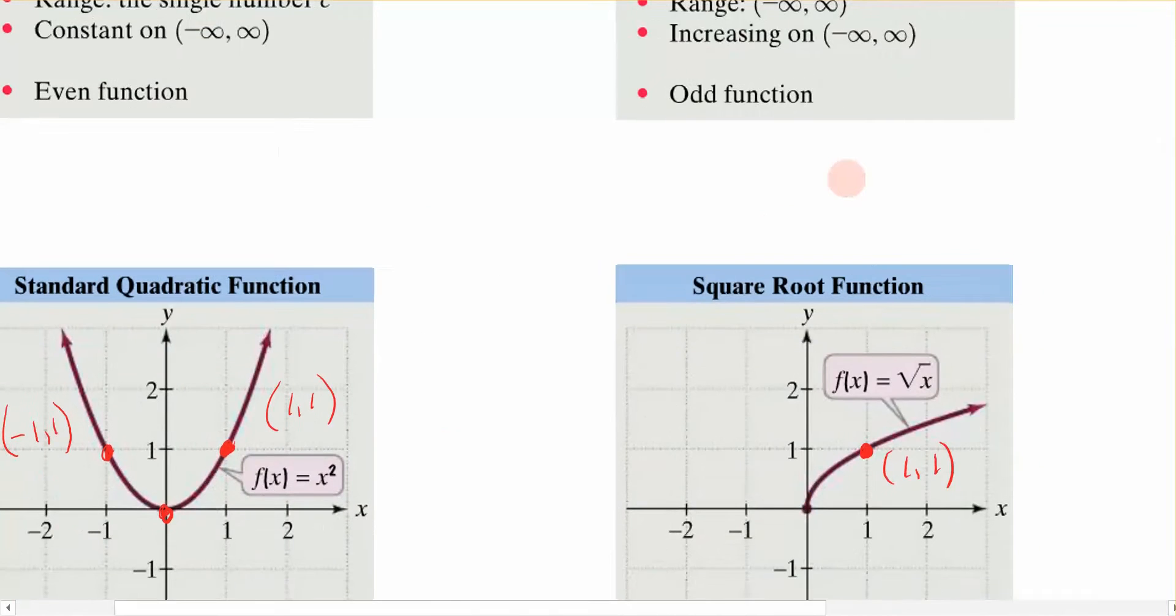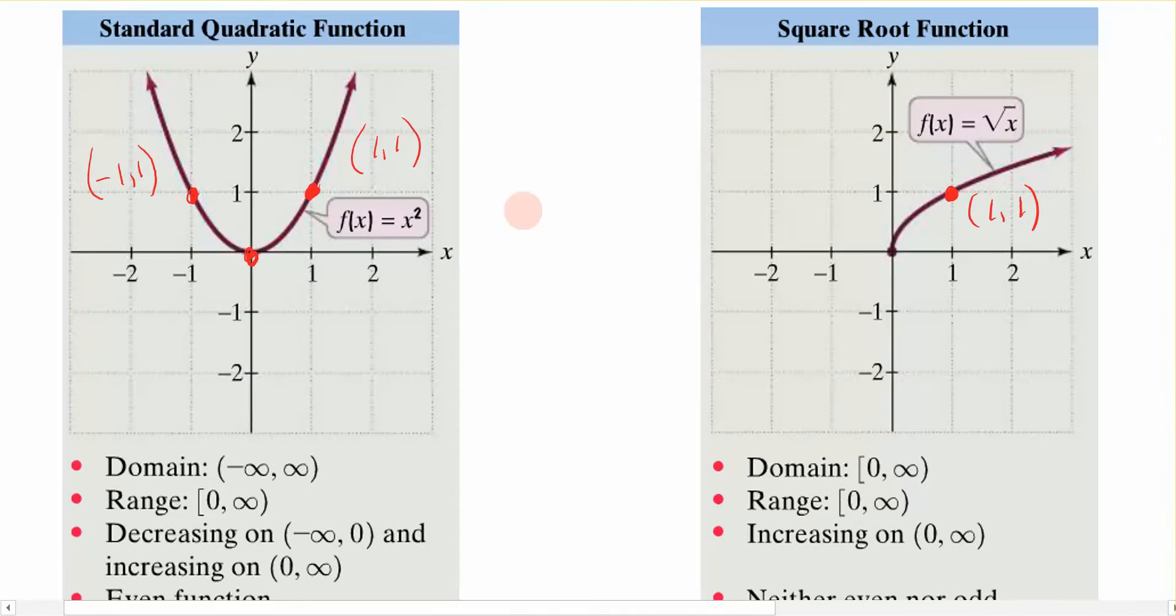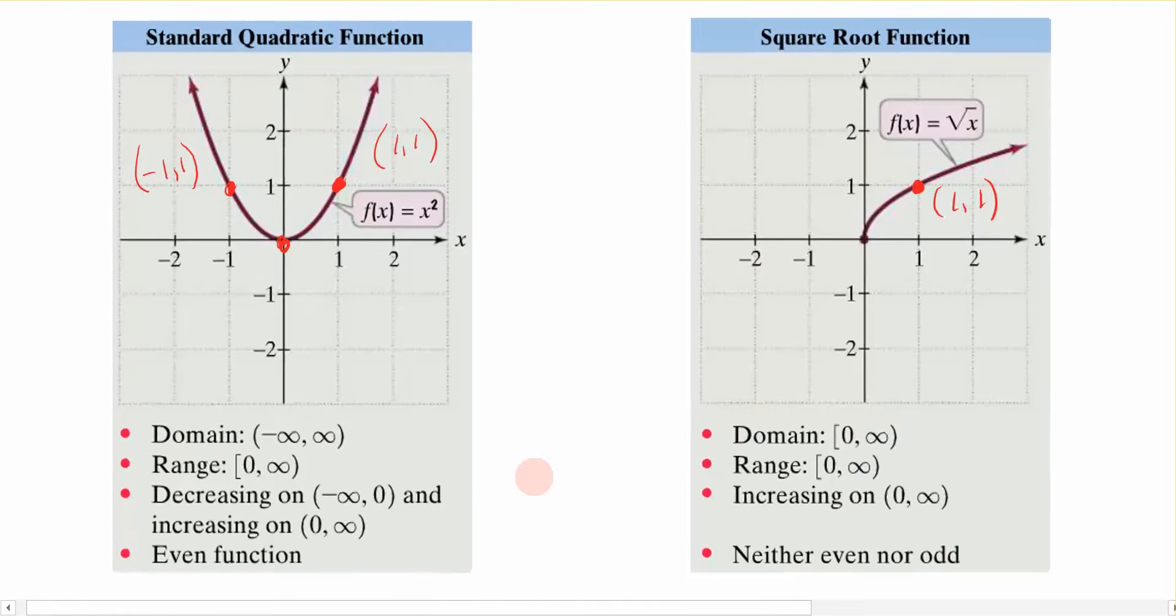Now let's come down here. These are the fourth and fifth ones. You have your standard quadratic function, which is f of x is equal to x squared. Notice the register points I put on here. This is a parabola pointing up, you should be fairly familiar with that one.